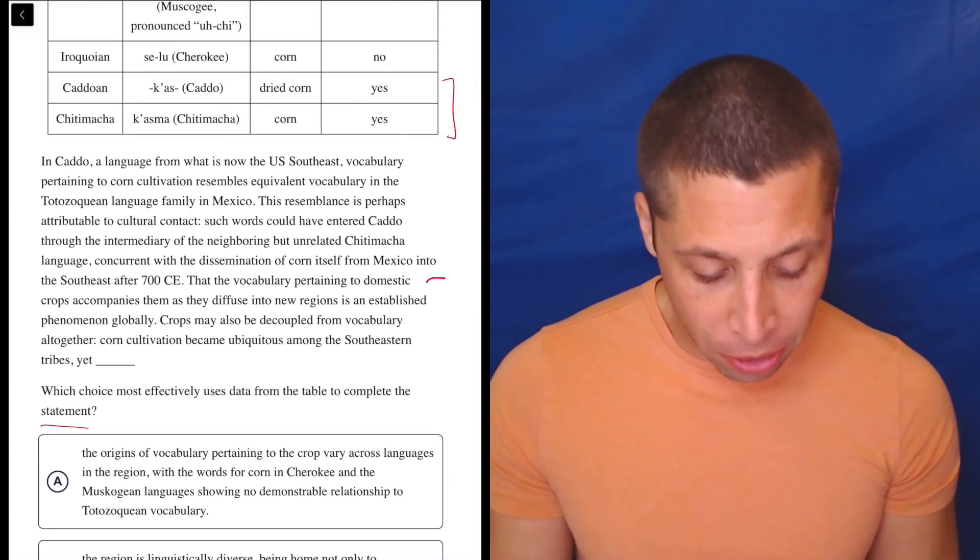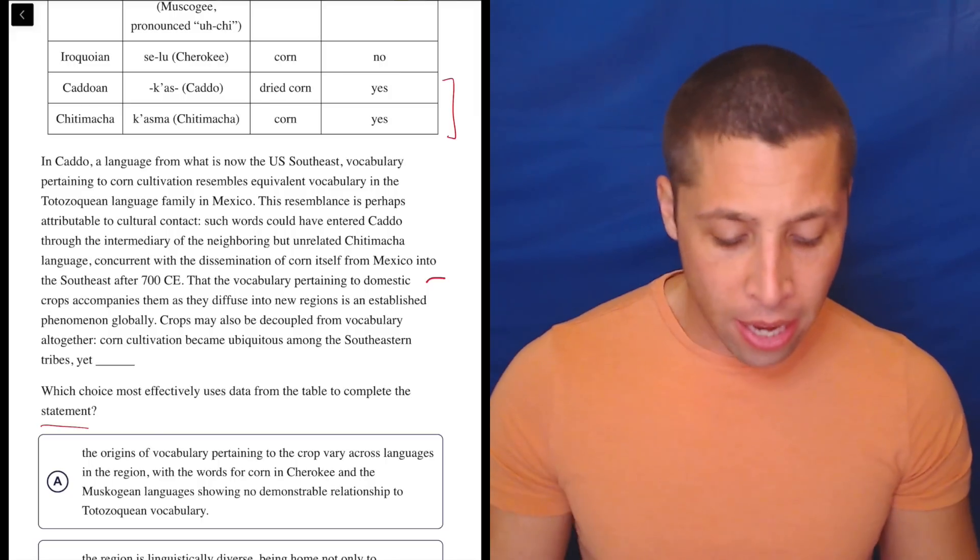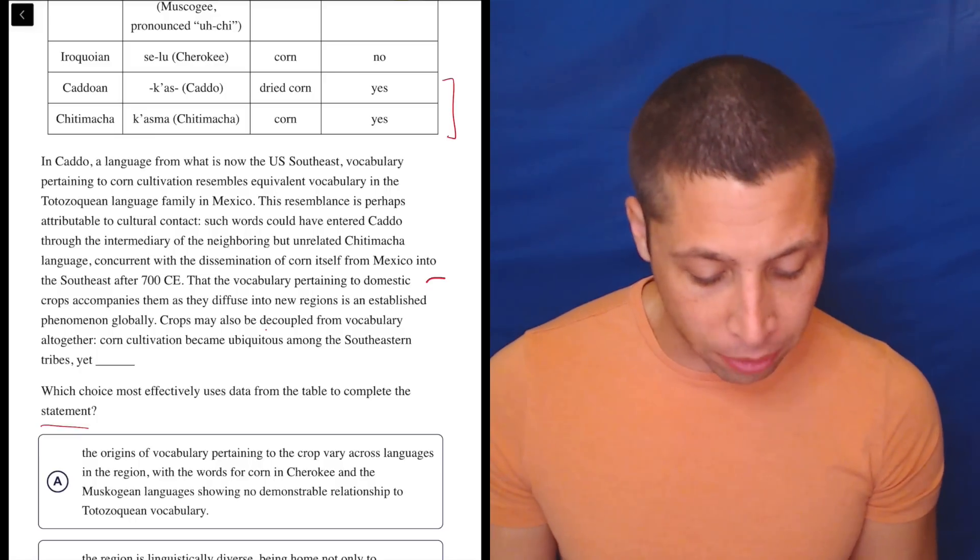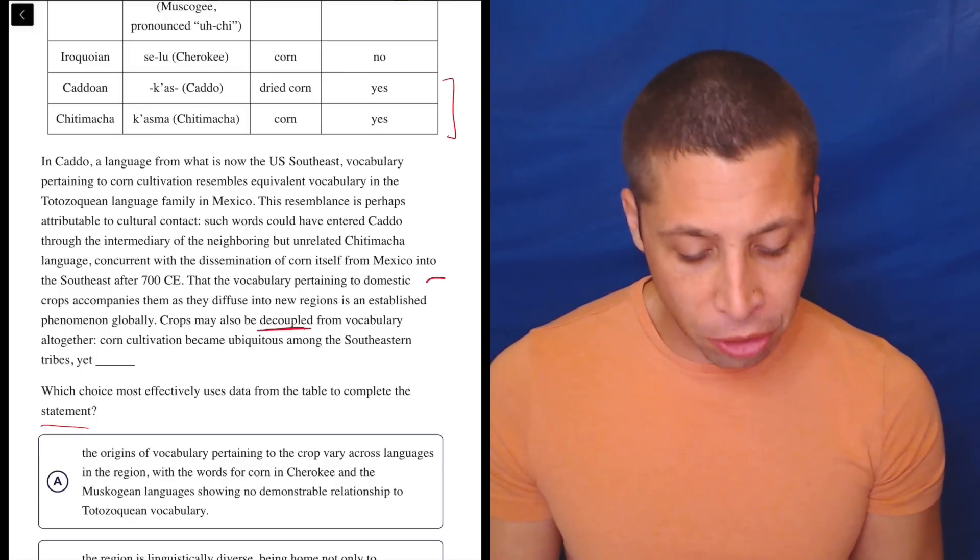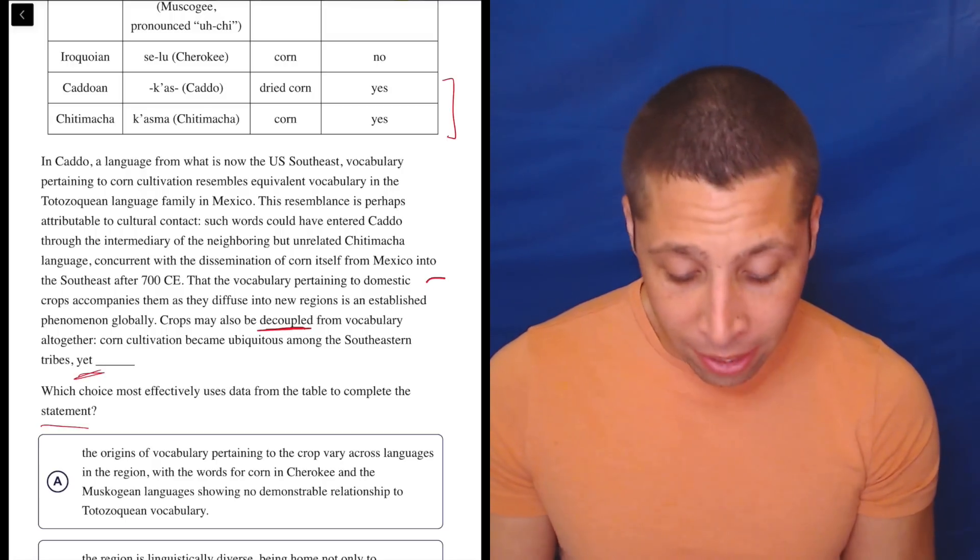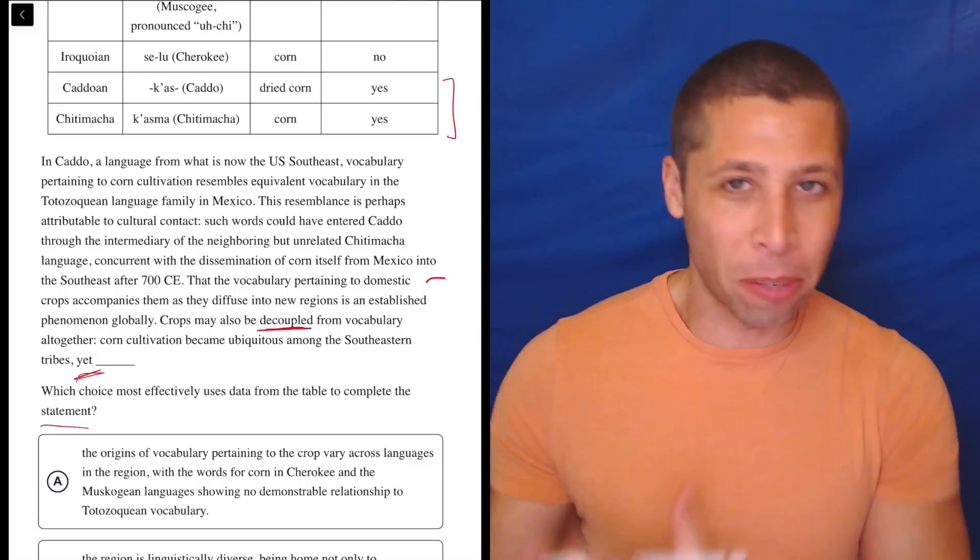That the vocabulary pertaining to domestic crops accompanies them as they diffuse, meaning spread, into new regions is an established phenomenon globally. Crops may also be decoupled from vocabulary altogether. Corn cultivation became ubiquitous among the Southeastern tribes, yet. Well, most important thing is the word yet there, right? So it's saying there's some sort of contrast.